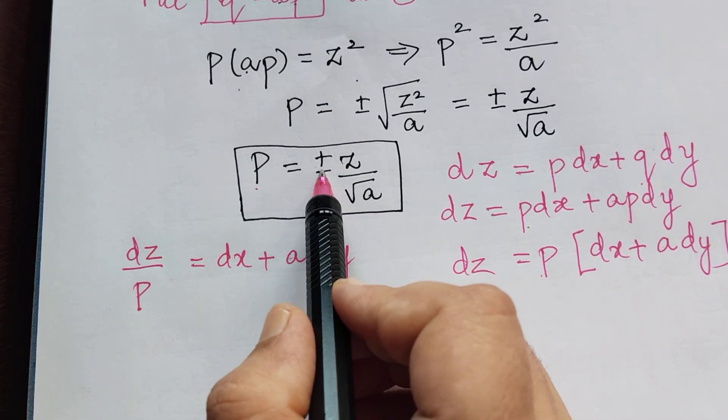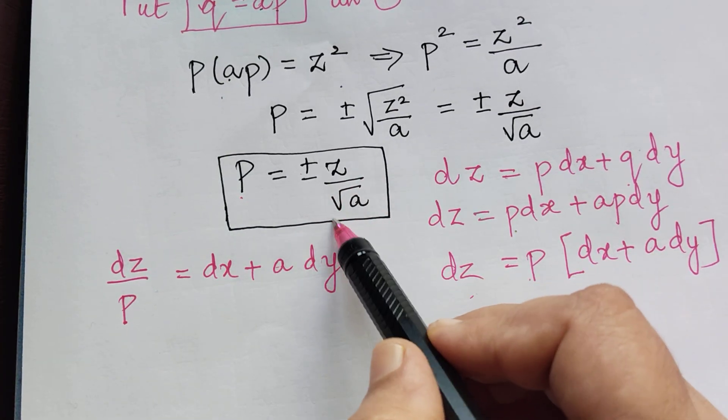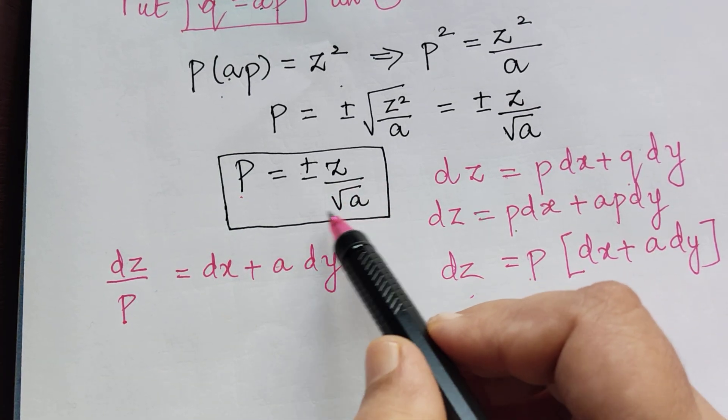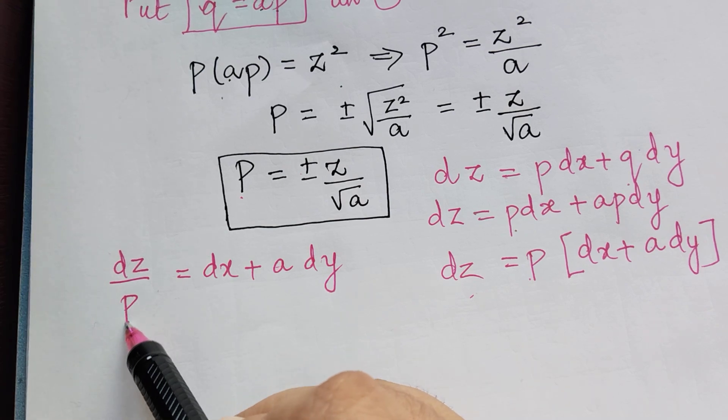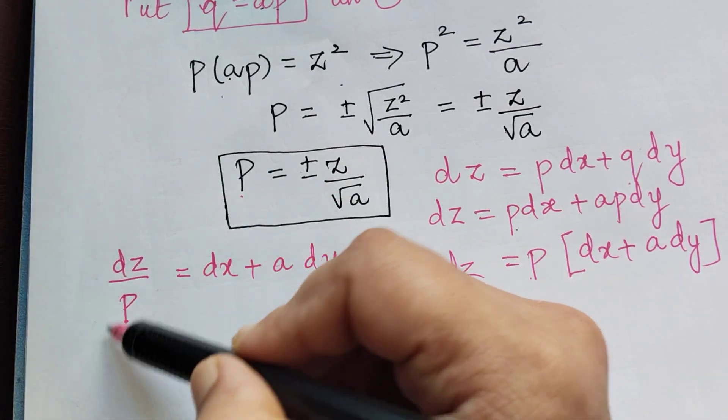P = ± Z/√A. When we substitute that, since P is in the denominator, we take the reciprocal and substitute.